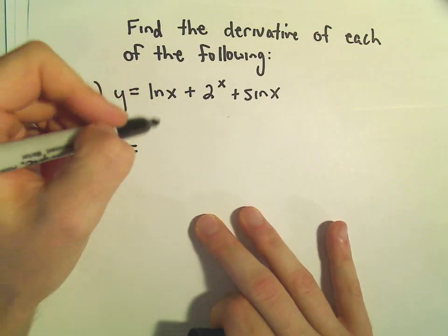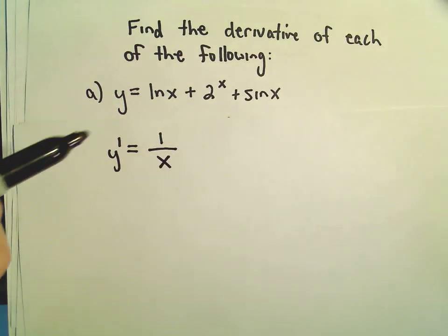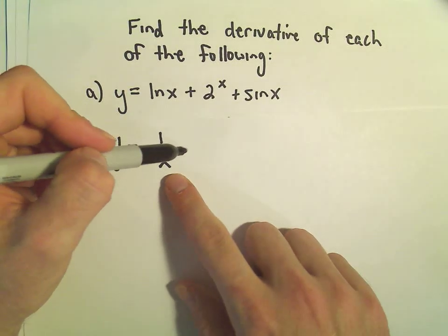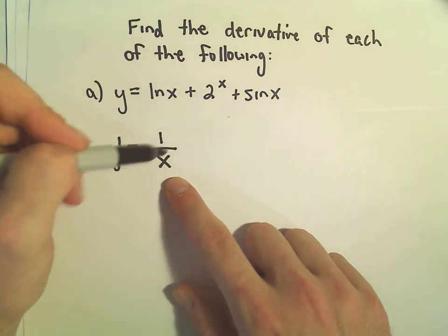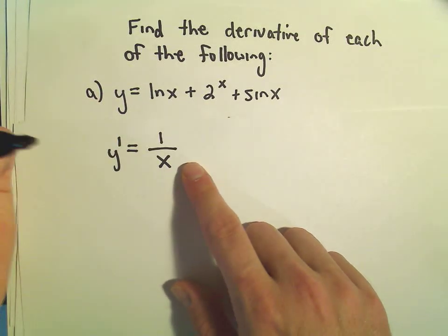So the derivative of ln of x is just 1 over x. Well okay I said that, but if you want to think about the chain rule, the derivative of the inside part, so if we take the derivative of x we just get times 1, which we don't write.